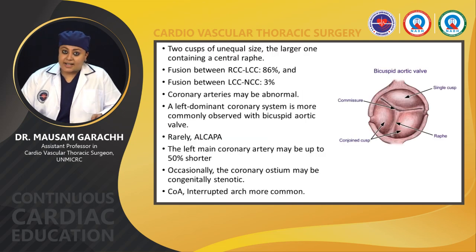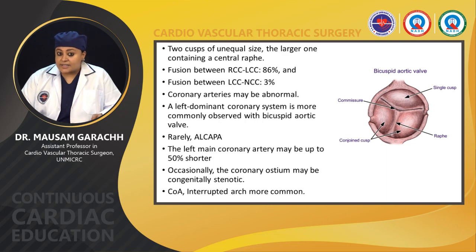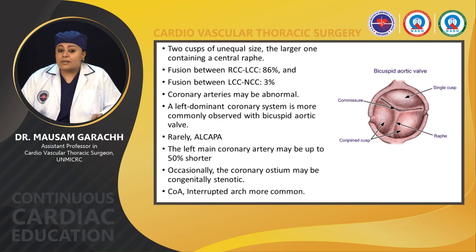The two cusps are of unequal size, the larger one containing a central raphe. Fusion between RCC-LCC is common at around 86%, and fusion between LCC-NCC is around 3%. The coronary arteries may be abnormal. A left-dominant coronary system is more commonly observed with a bicuspid aortic valve. Rarely, LMCA may be present. The left main coronary artery may be up to 50% shorter. Occasionally, the coronary ostium may be congenitally stenotic. It can be associated with coarctation of aorta and interrupted aortic arch.